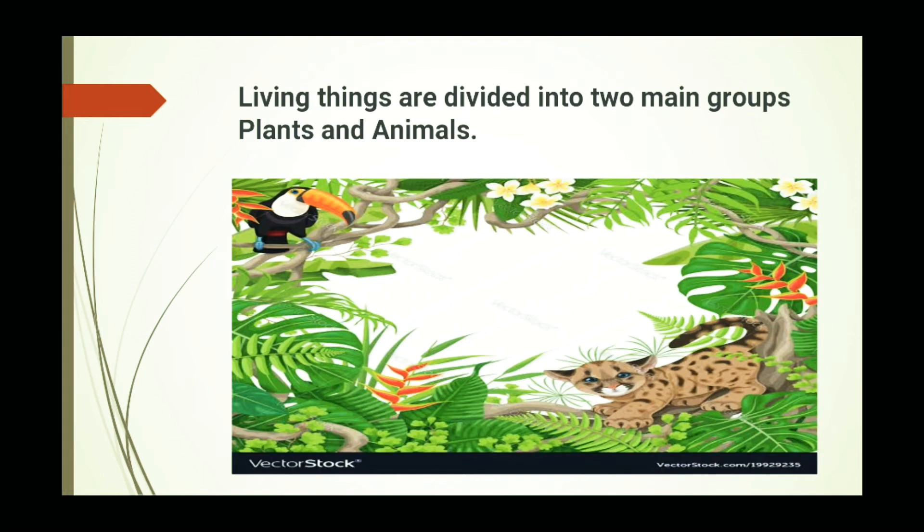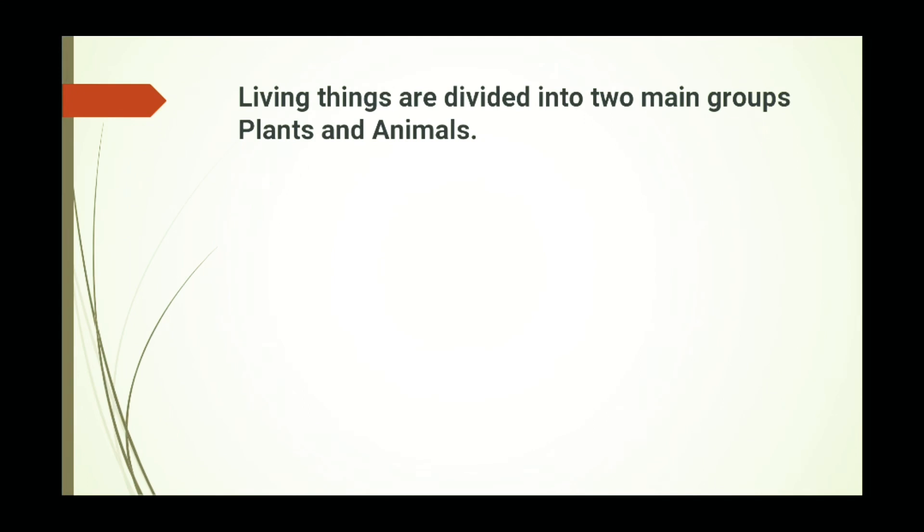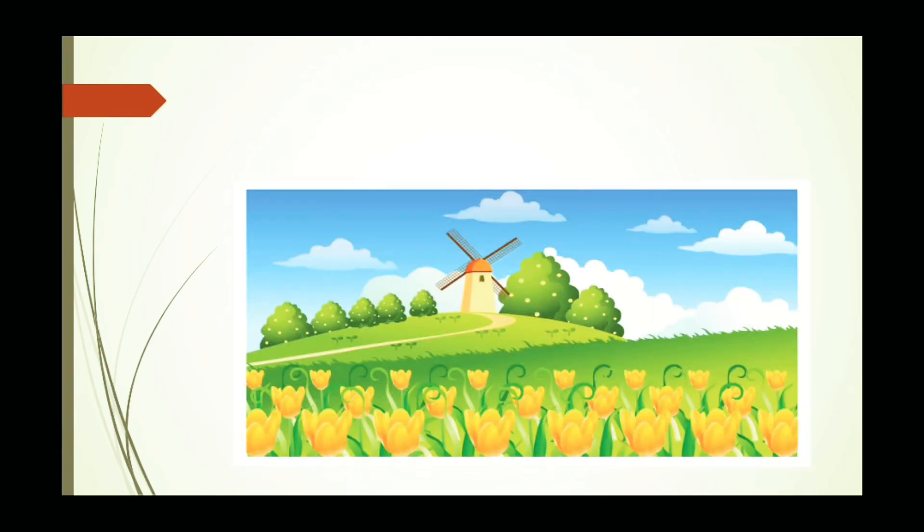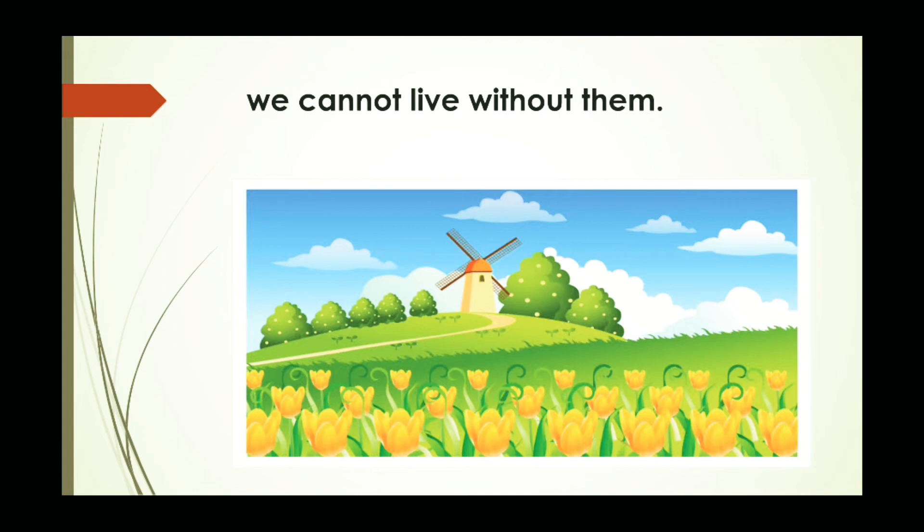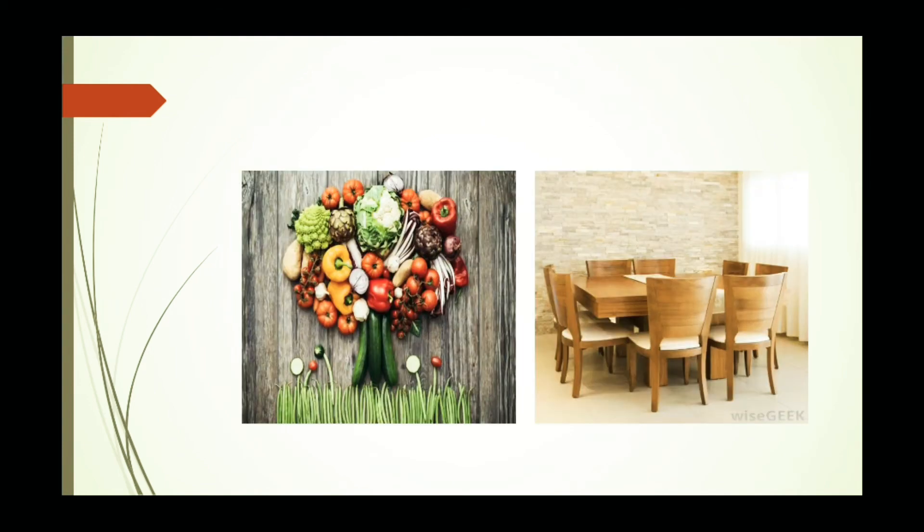Which are these? First one is plants and second one is animals. And plants are very important to us. We cannot live without them. Without plants we cannot live. Why? Why we cannot live without them? Because it gives us food, oxygen and many other things. Therefore we cannot live without them.